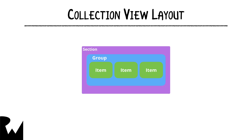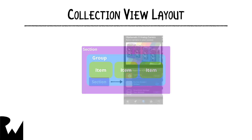Finally, we have sections. A section is simply a grouping of data, and corresponds to how the data is organized in the data source. A collection view can have multiple sections, each containing its own groups and items.